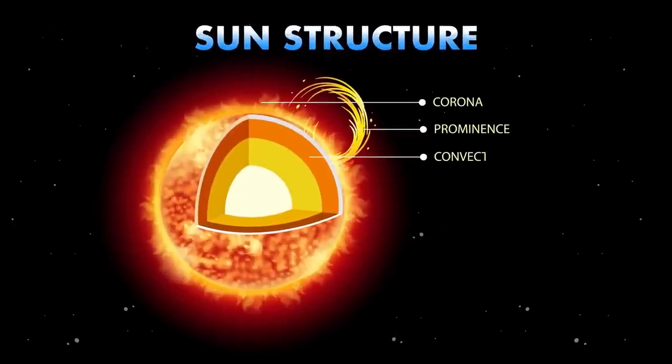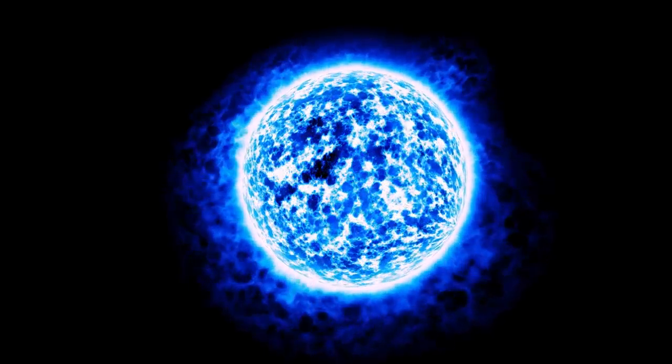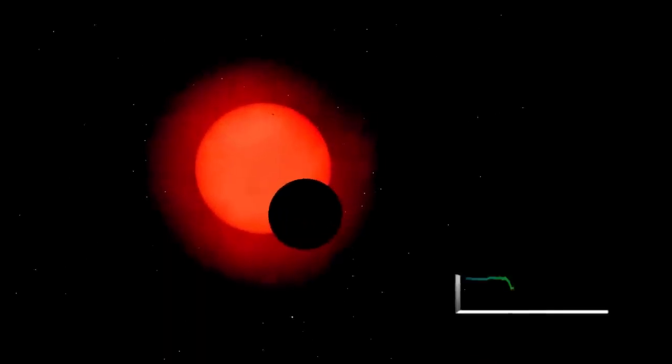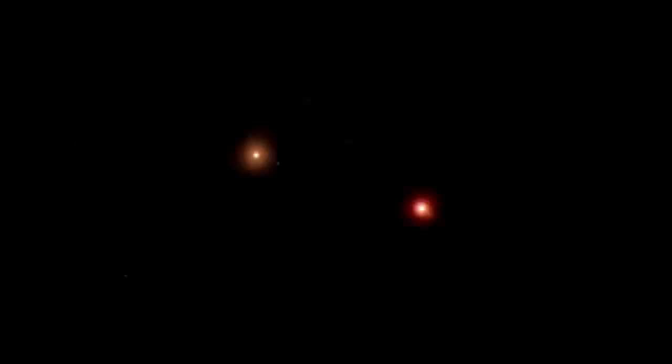The star would collapse in on itself in what's known as a core collapse supernova, an explosion so powerful it would release more energy in a few weeks than the sun will over its entire 10 billion year lifetime. During this event, Betelgeuse would briefly become as bright as the full moon, visible in the daytime sky.